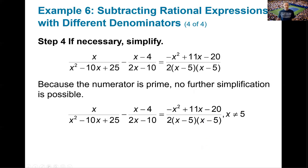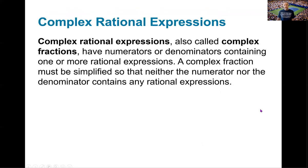The final answer of negative x squared plus 11x minus 20 over 2 times x minus 5 squared has no further simplification since the numerator is prime. You must remember this answer only exists if x does not equal 5, because if x equals 5 you're dividing by zero in the very first step, making the problem undefined.